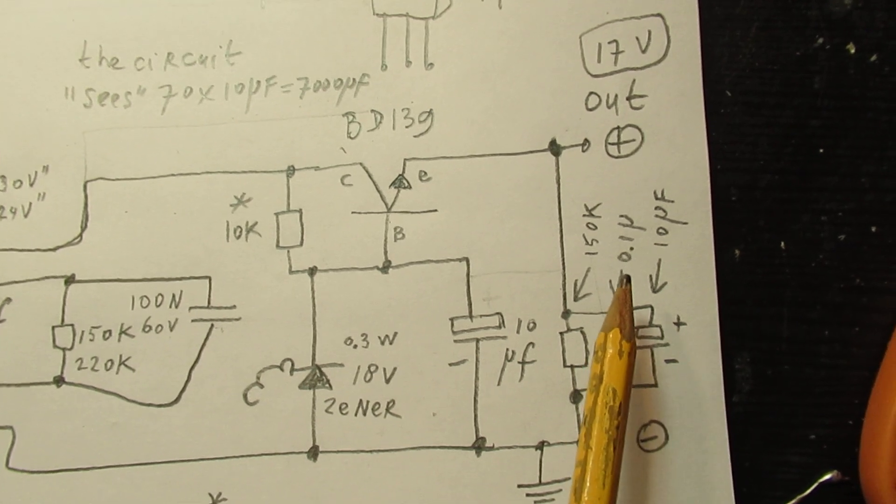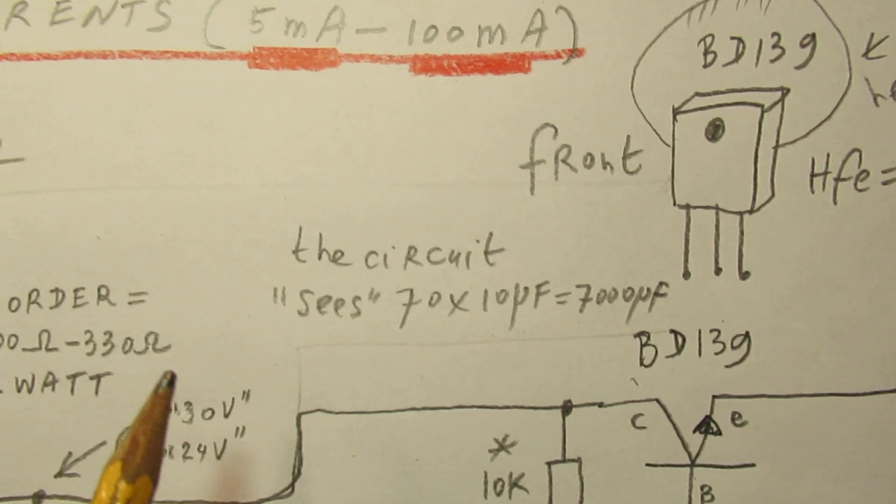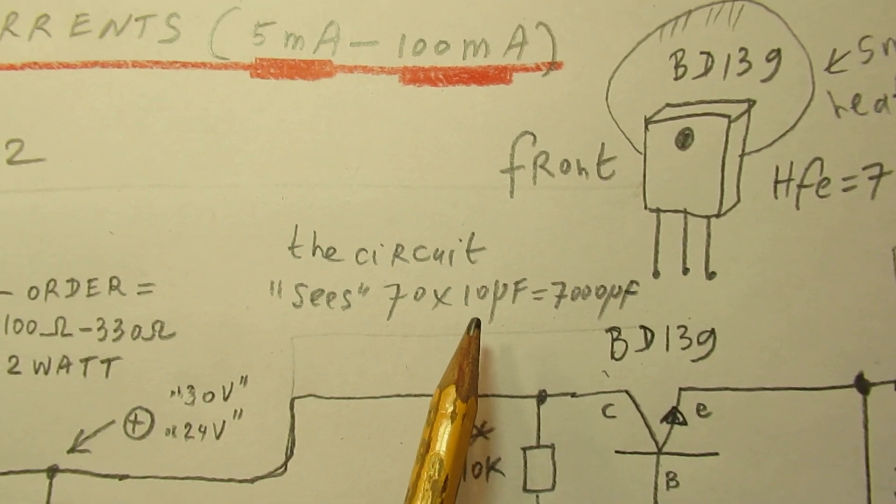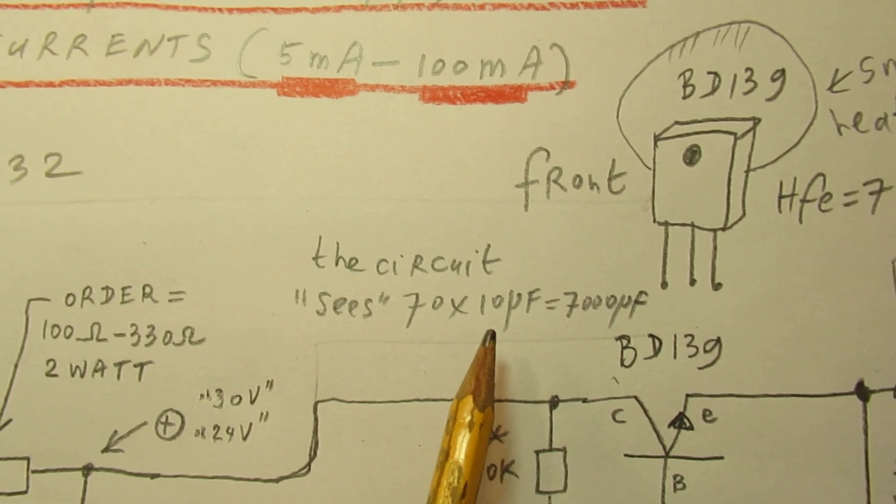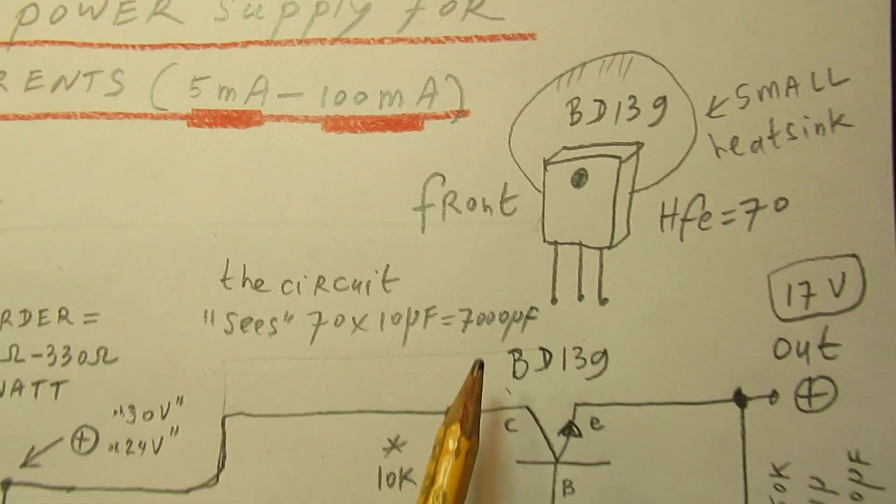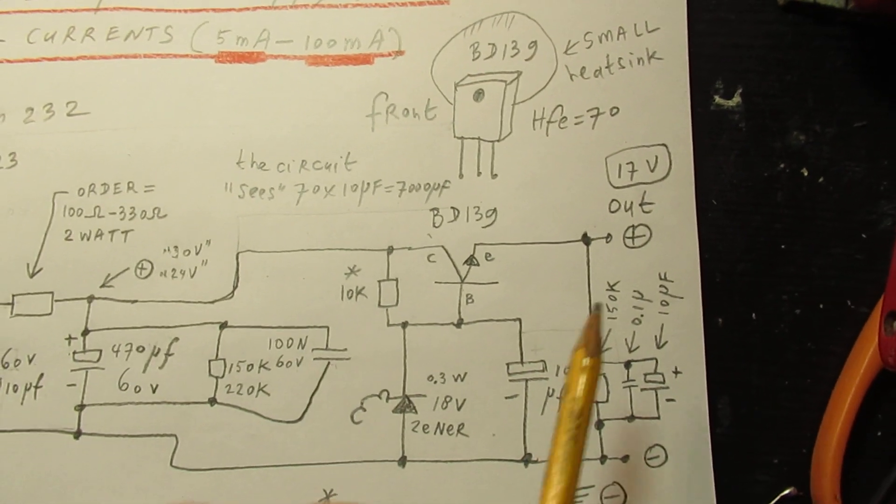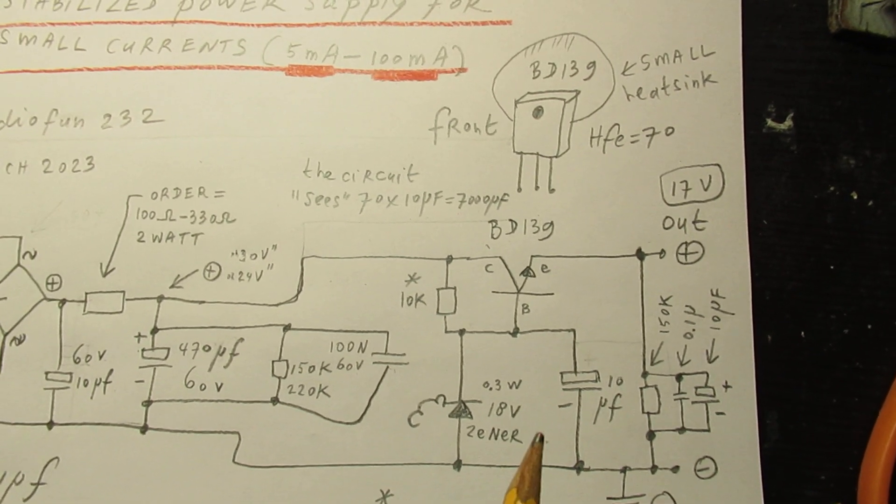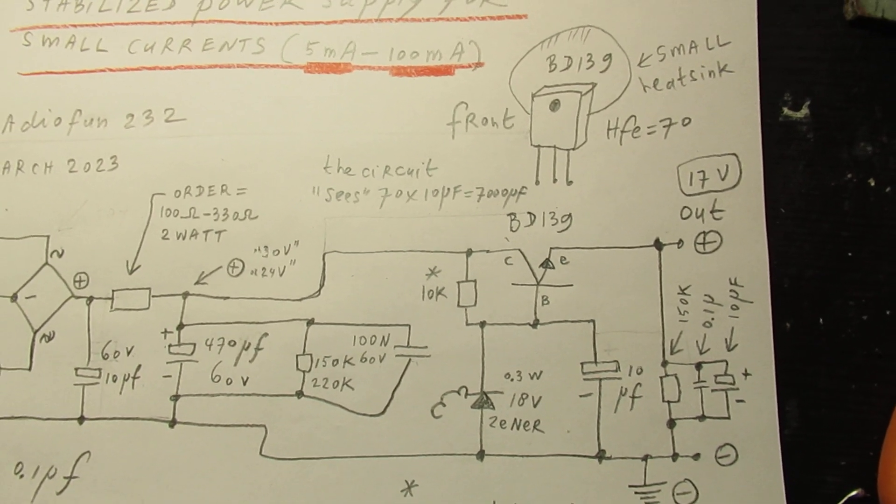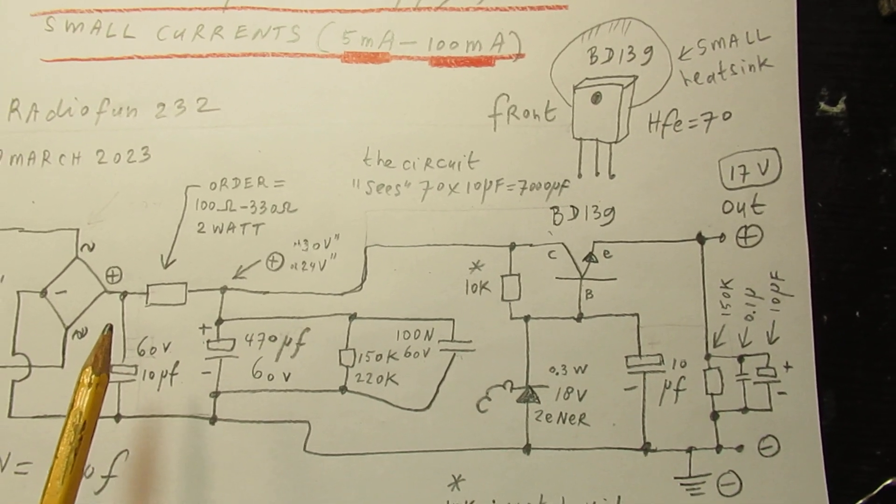The capacitance that the circuit that is connected here to the output sees is the amplification factor multiplied by the capacitor value. So that is 70 multiplied by 10 is approximately 7000. So there is an enormous hum rejection here at the output, and that means that you can also use this circuit for a sensitive audio pre-amplifier, not an end amplifier of course because this circuit cannot give a lot of current.